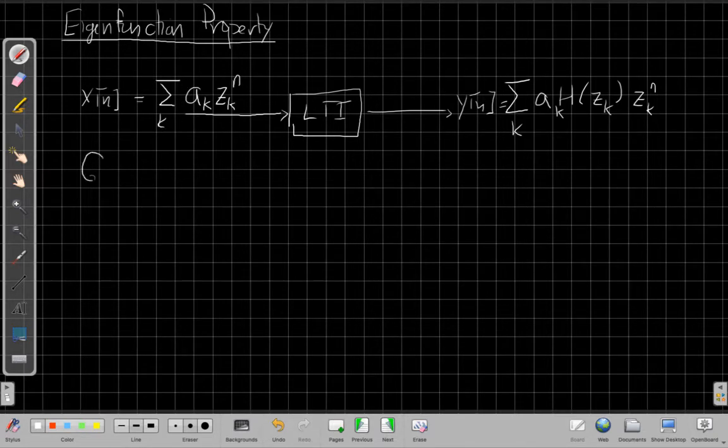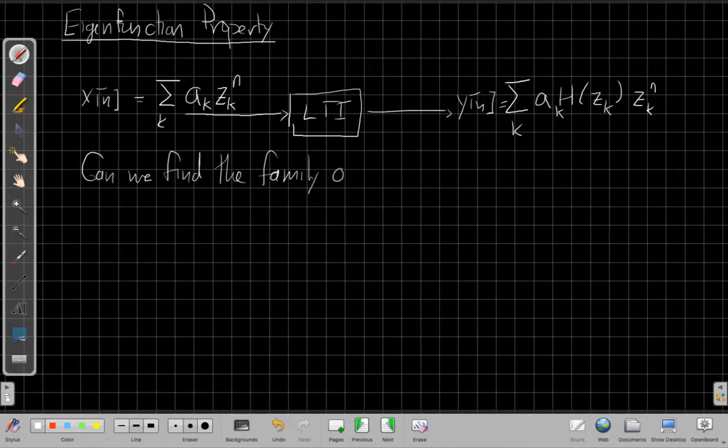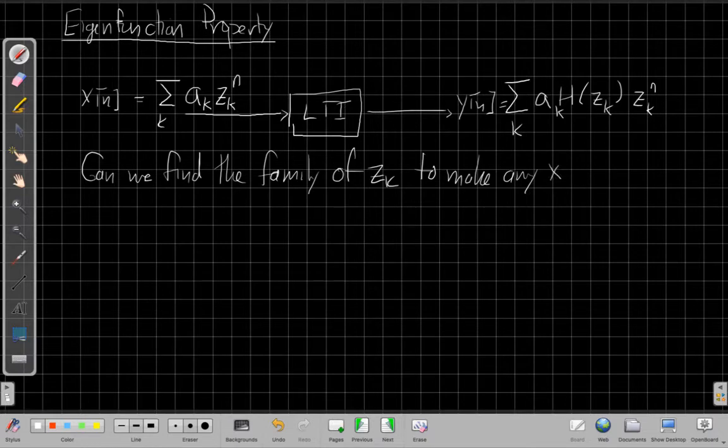the key idea is we need to find the right set or family of z sub k to make any x of n. So that's the big, alright, that's great if we can do this, but I don't always get inputs that are exponentials like the example in the previous video. What if I get just some random periodic signal? Well, this is the big idea.